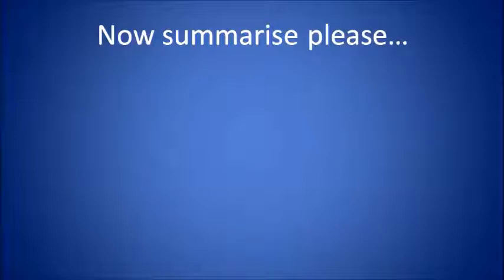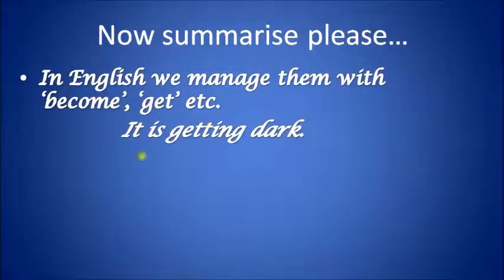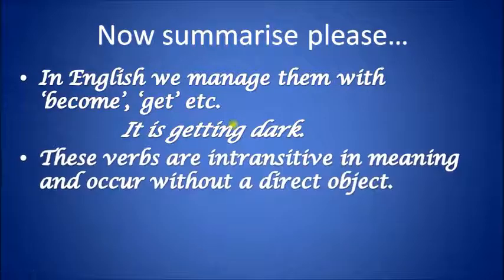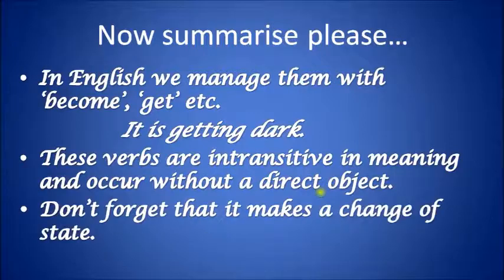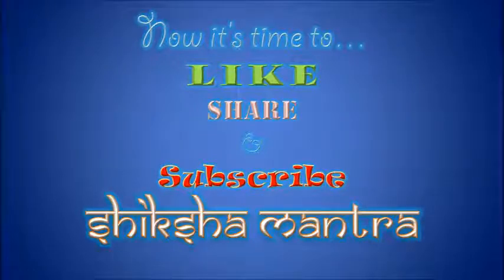To summarize: in English we manage incoative verbs with 'become' or 'get' — for example, 'it's getting dark' means 'it's darkening.' Second, these verbs are intransitive in meaning and occur without a direct object. Third, they always describe a change of state. Like, share, and subscribe to Shiksha Mantra — we are coming with many such verbs you've probably heard for the very first time!